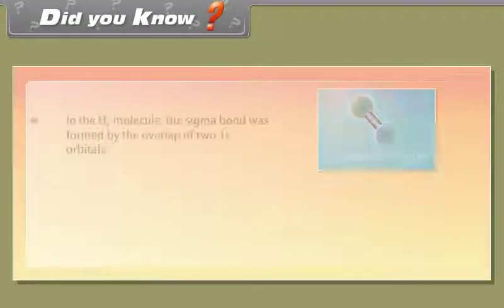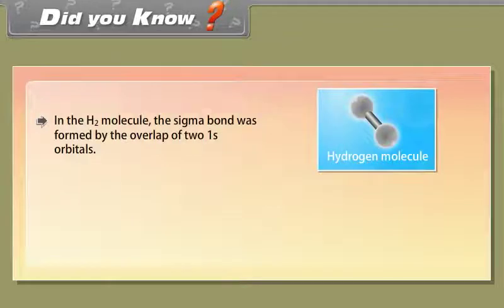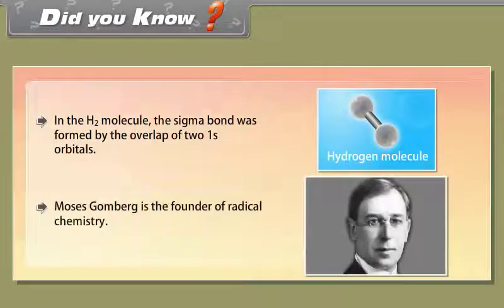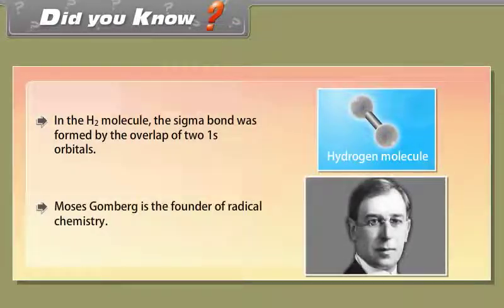In the hydrogen molecule, the sigma bond was formed by the overlap of two 1s orbitals. Moses Gomberg is the founder of radical chemistry.